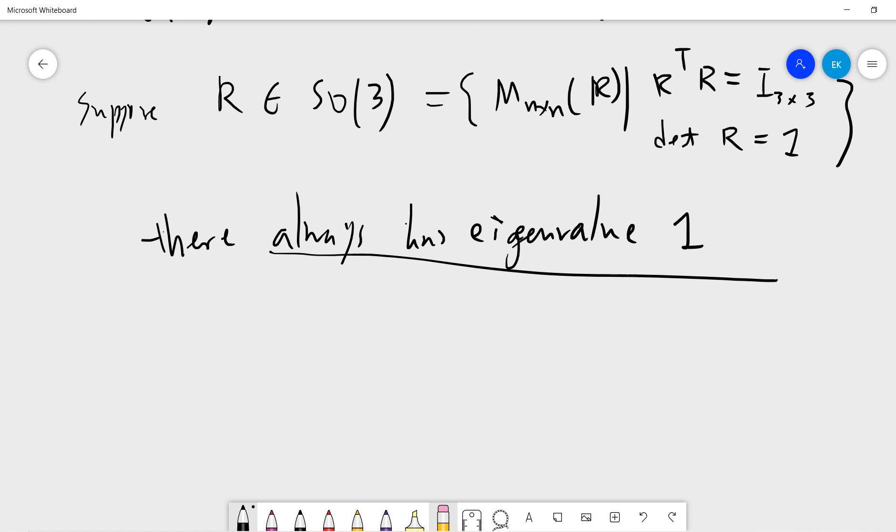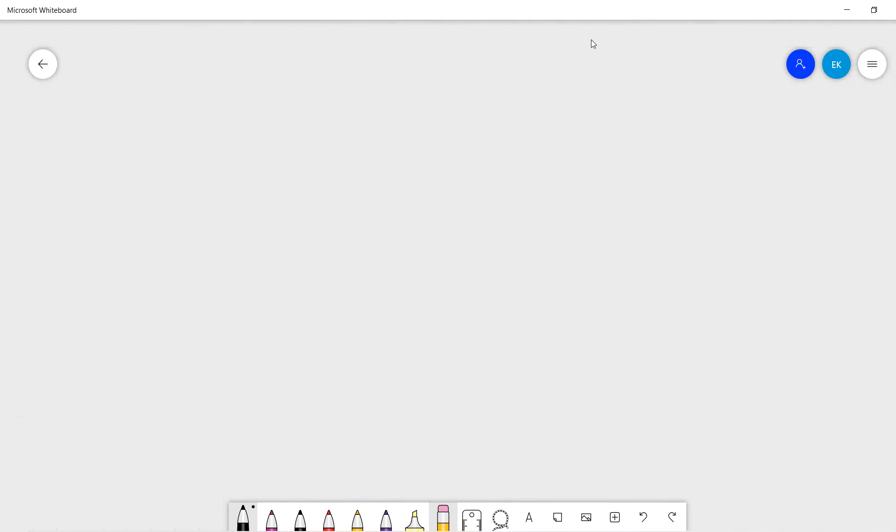So this is what we want to prove. In order to prove that R has eigenvalue one, we just want to show this. We just want to show this is zero. It's very easy.